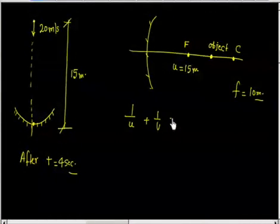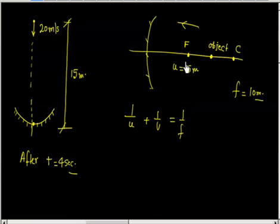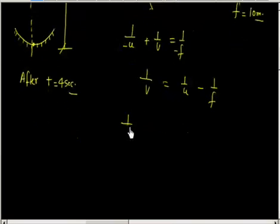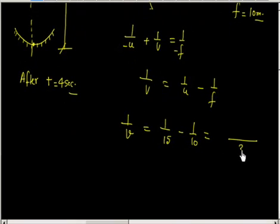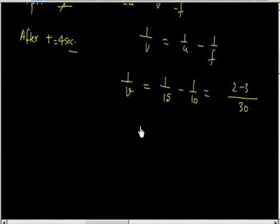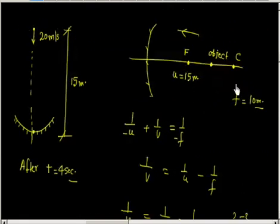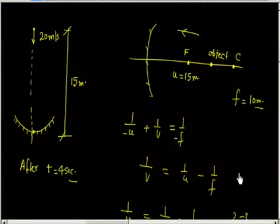Using 1/u + 1/v = 1/f, with u and f both negative (same side as incoming rays): 1/v = 1/u − 1/f = 1/(−15) − 1/(−10) = −1/30. So v = −30 meters. The negative sign means the image is formed on the same side as the object, at 30 meters from the mirror.